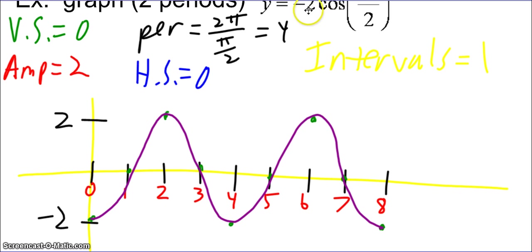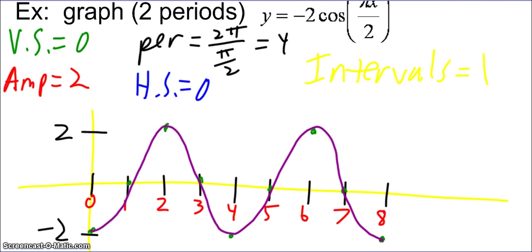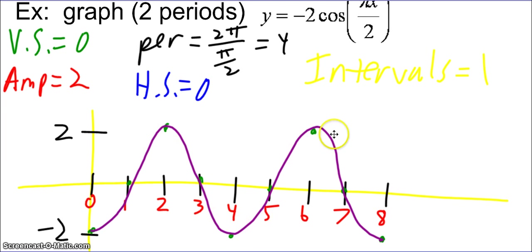There was a negative in front of the negative two, so although the amplitude is positive, the cosine curve is going to start below the axis. Then I plot my points for two periods of the cosine function.